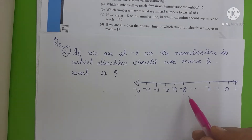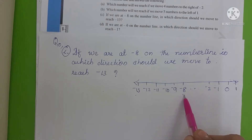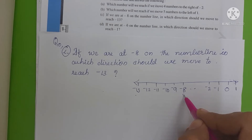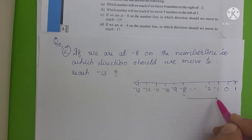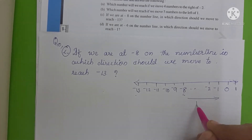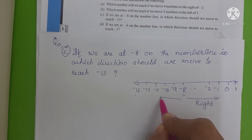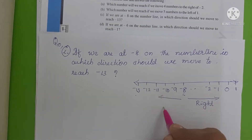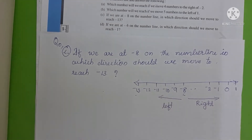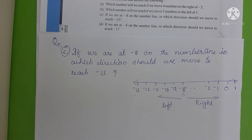First we stand on minus 8, which is our starting point. This is minus 8. The right direction of minus 8 goes toward zero, and the left direction goes toward more negative numbers. We identify these directions.